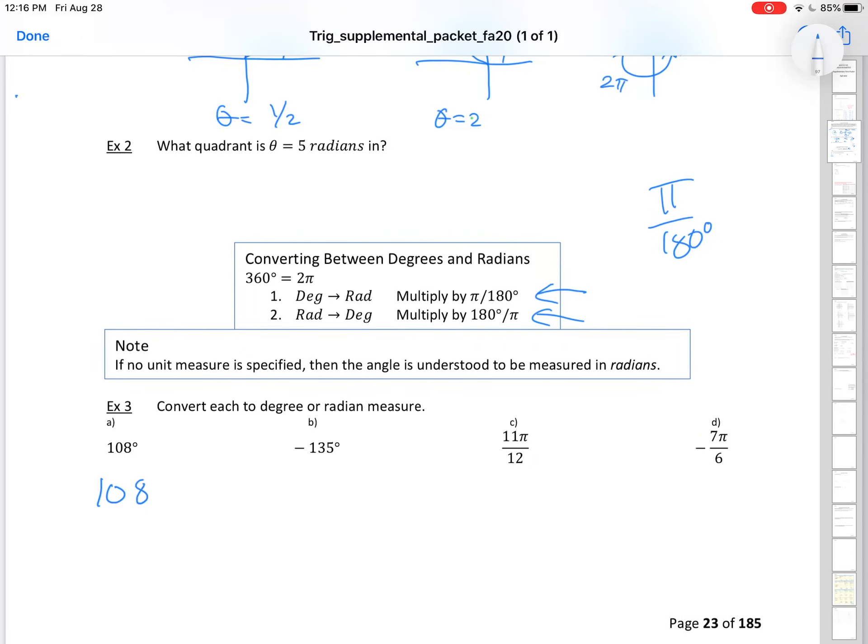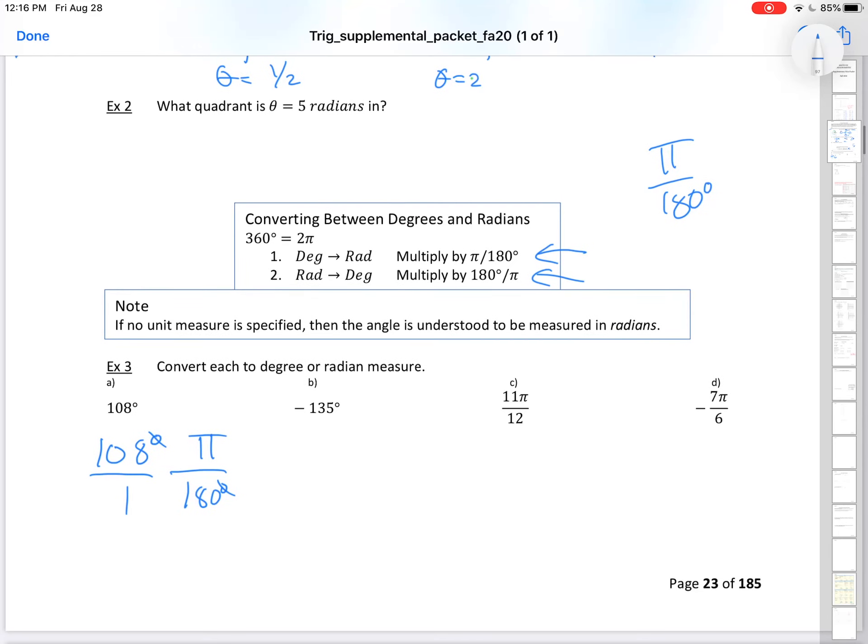If you have 108 degrees, you can say I don't want degrees. So the 180 degrees goes on the bottom so that the units cancel out, and I got π over 180. When you do that reduction, it will reduce down to 3π/5. You must put them in their reduced form.